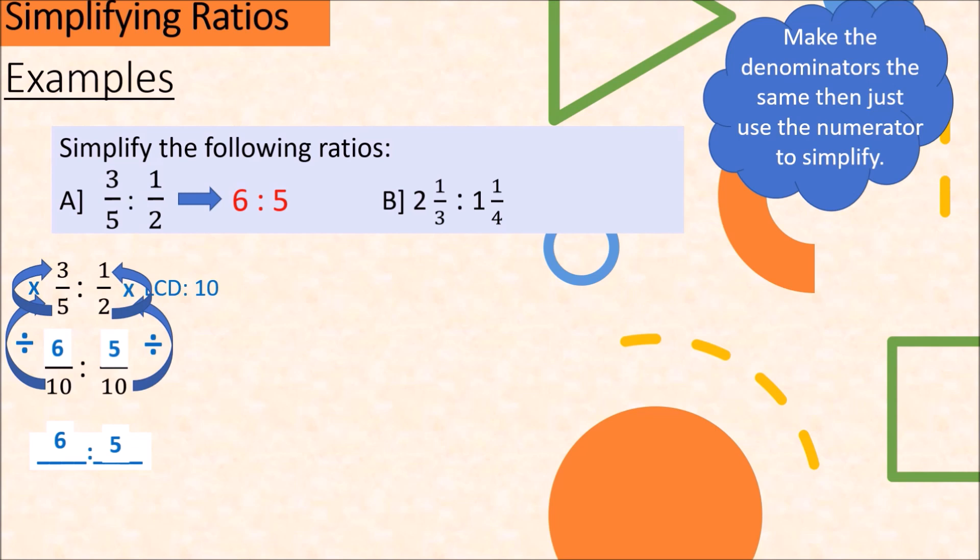Now for the second example, 2 and 1/3 is to 1 and 1/4. These are given in mixed numbers. So we have to make them improper fractions first. From mixed numbers like 2 and 1/3, you multiply 3 times 2 plus 1 to get numerator. And the denominator will be the same as the denominator of the fraction part. So let's find the numerator. 3 times 2 is 6. 6 plus 1 is 7. So 2 and 1/3 becomes 7 over 3.